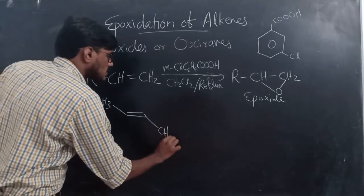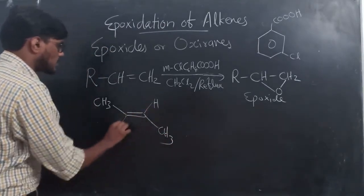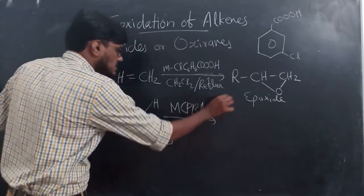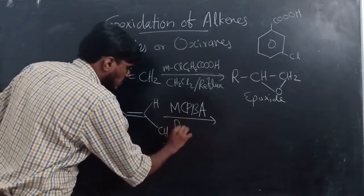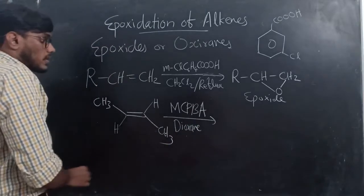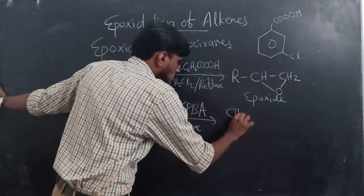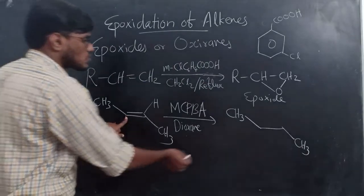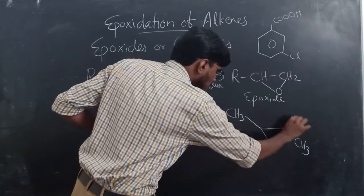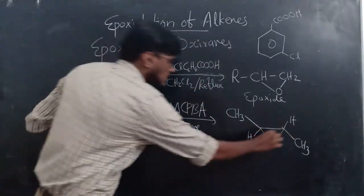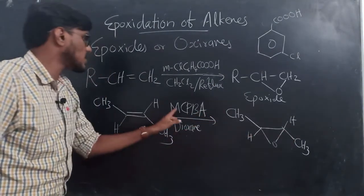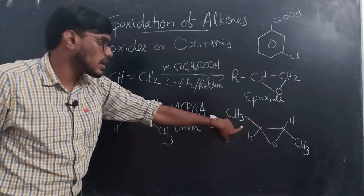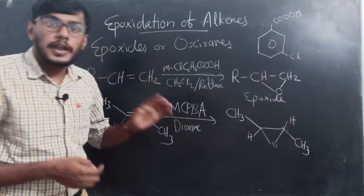Another example: take the alkene CH3-CH=CH-CH3 (with hydrogens shown). On reaction with metachloroperbenzoic acid in the presence of dichloromethane, the double bond becomes a single bond and a bond forms between the two carbons and oxygen, giving an epoxide. So metachloroperbenzoic acid is the reagent, and this reaction is called epoxidation.